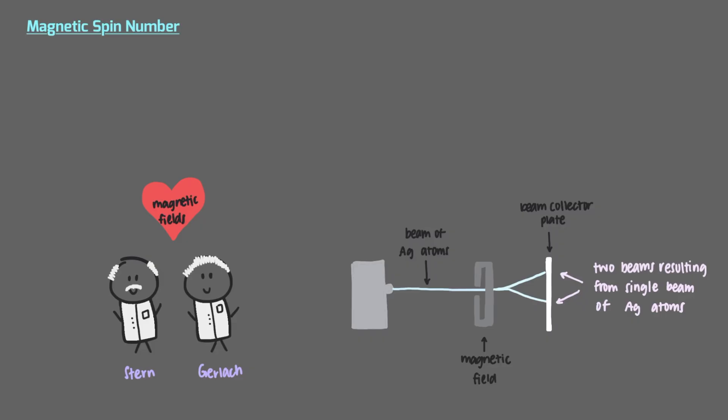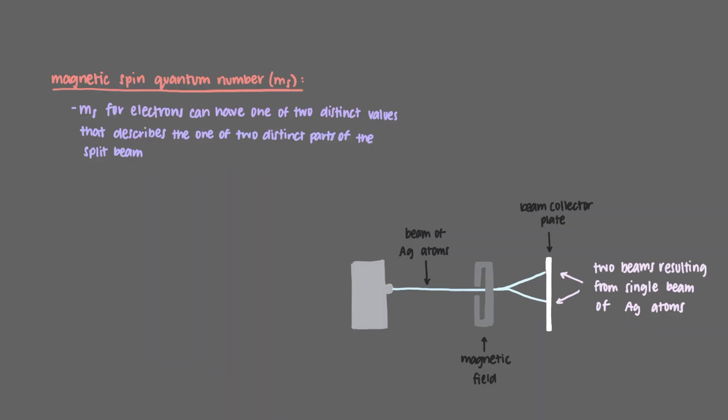To explain their observation of two distinct paths for the atoms, to explain the splitting they saw, they needed to include a new quantum number, the magnetic spin quantum number denoted by m sub s. m sub s for electrons can have one of two distinct values that describes the one of two distinct parts of the split beam, negative one-half or plus one-half.